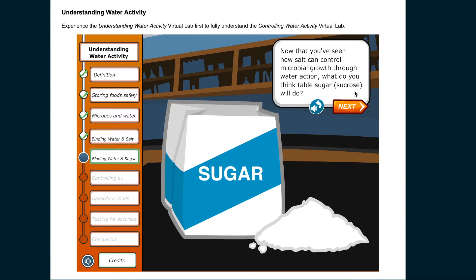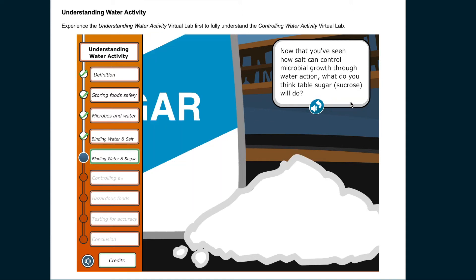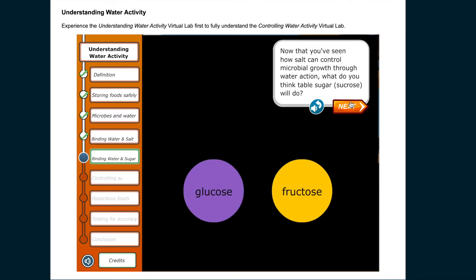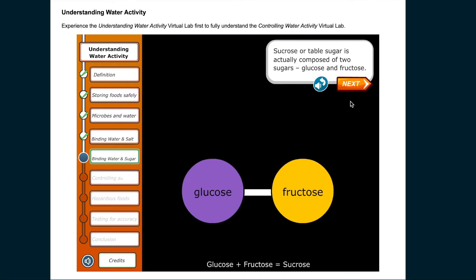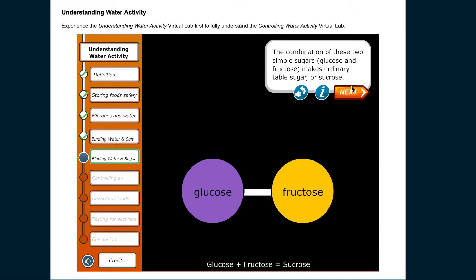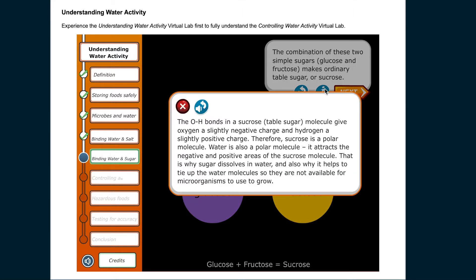Now that you've seen how salt can control microbial growth through water activity, what will table sugar (sucrose) do? Sucrose is composed of two sugars — glucose and fructose. The OH bonds in a sucrose molecule give oxygen a slightly negative charge and hydrogen a slightly positive charge. Therefore, sucrose is a polar molecule. Water is also a polar molecule, so it attracts the negative and positive areas of sucrose — that is why sugar dissolves in water and helps tie up water molecules so they are not available for microorganisms to grow.